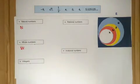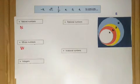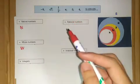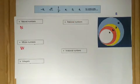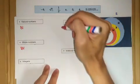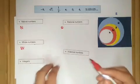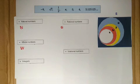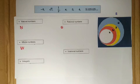The next one is integers. Integers consist of natural numbers, zero, and also the negative part of natural numbers — so integers consist of those three elements. The next one is what we call rational numbers, and we denote rational numbers with capital Q. Rational numbers are numbers that can be represented as a fraction of two integers, and in decimal form they are either terminating or recurring.